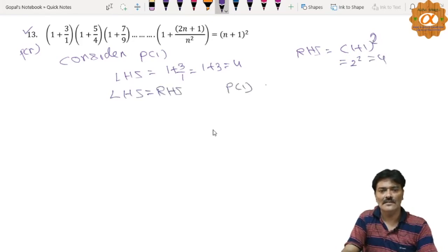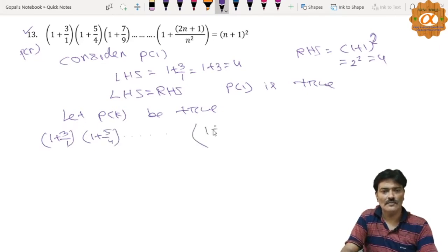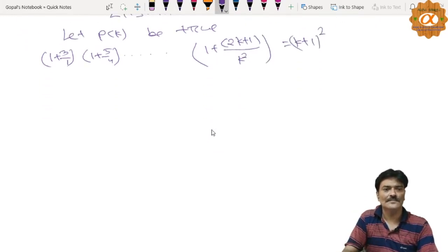That means P(1) is true. Okay, let P(k) be true. That means (1 + 3/1)(1 + 5/4)...(1 + (2k+1)/k²) is equal to (k+1) whole square. Okay, now